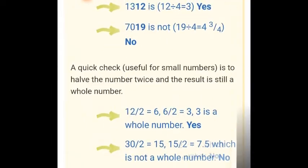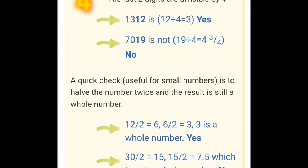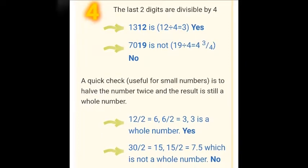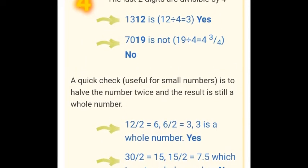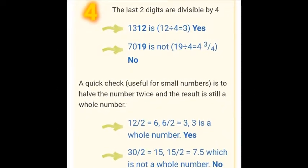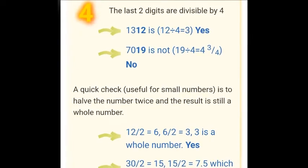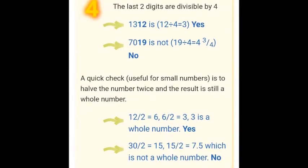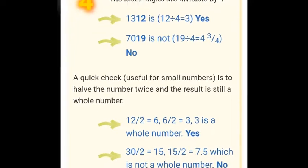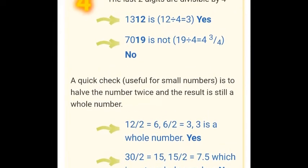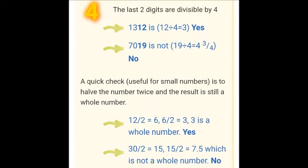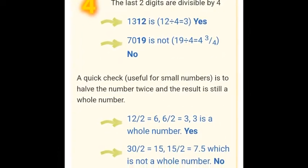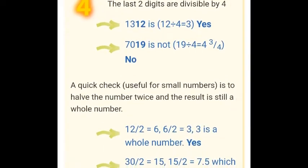Divisibility test by 4: a number is divisible by 4 if its last two digits are divisible by 4. For example, take the number 1312. Its last two digits are 12, and 12 is divisible by 4, so 1312 is divisible by 4. If we take 7019, its last two digits are 19. Since 19 is not divisible by 4, the number 7019 is not divisible by 4.